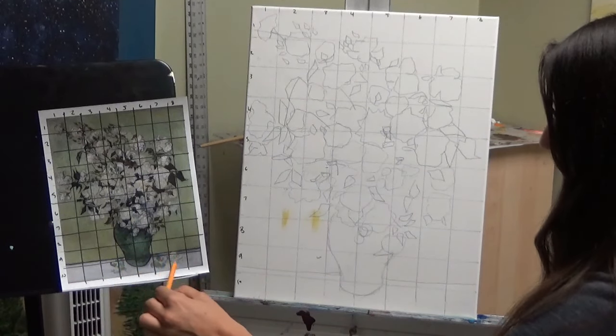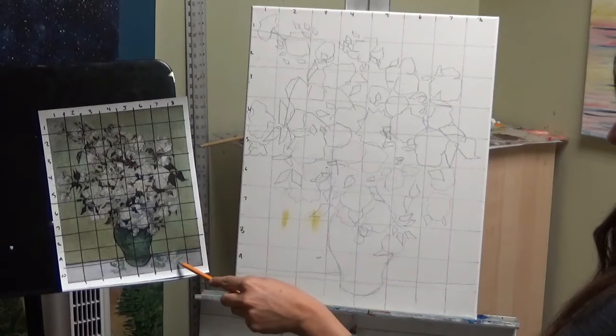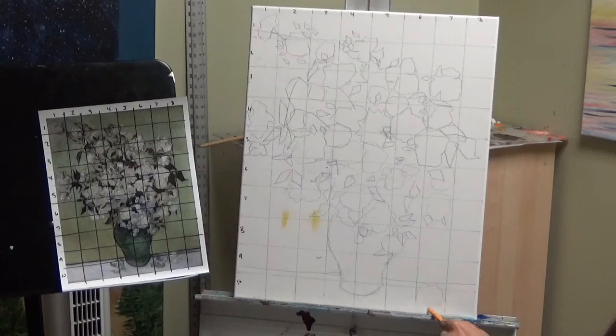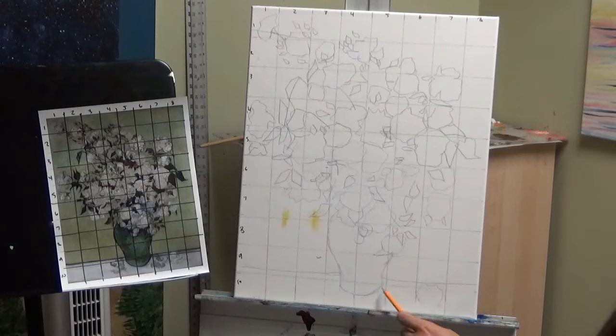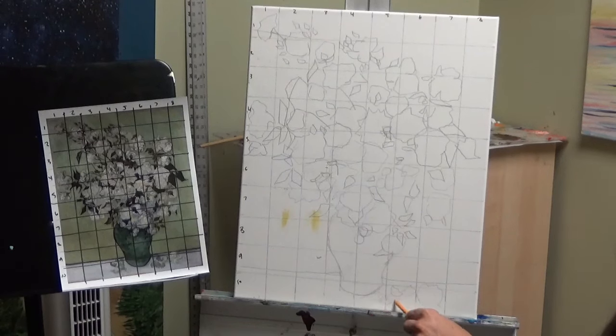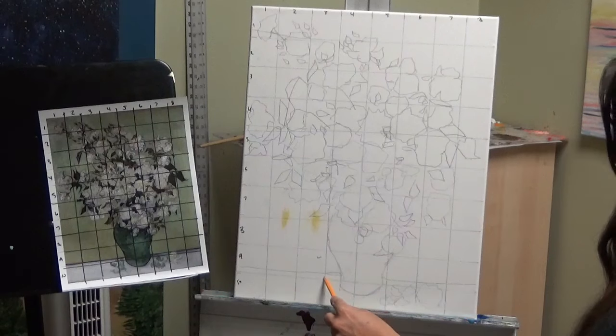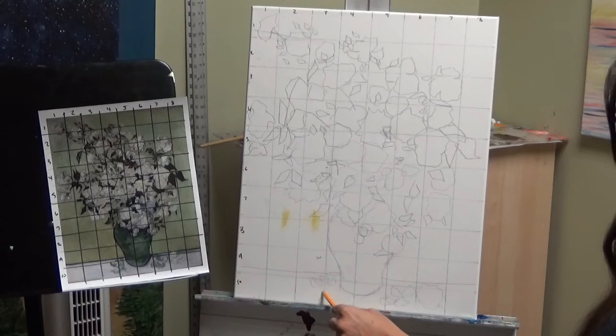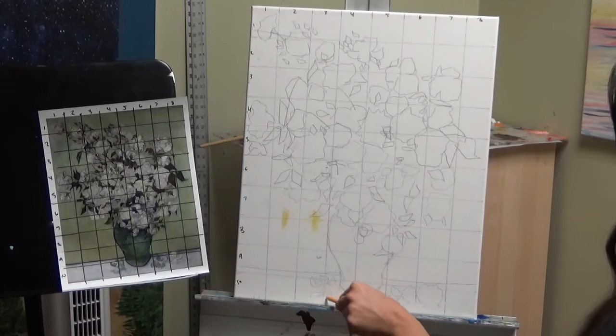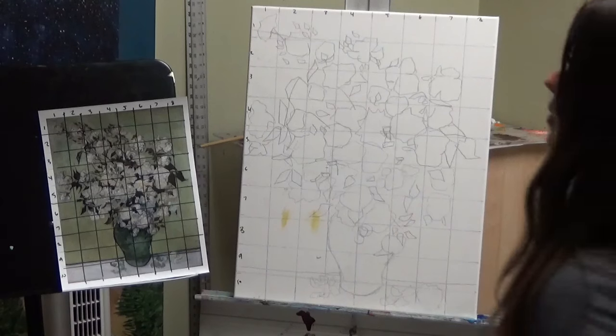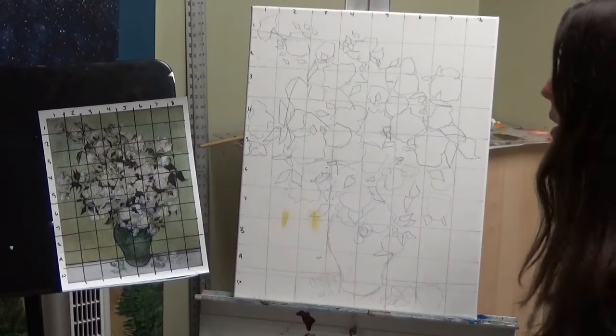And then down here in the ten area. In the ten seven we have a flower. That's petals that have fallen. And some of the leaves that have fallen as well. That kind of come out into that side. And then a couple over here. There we go.